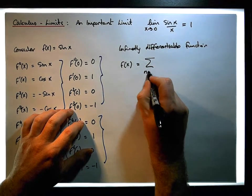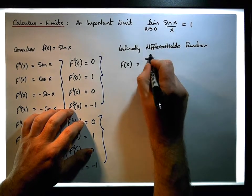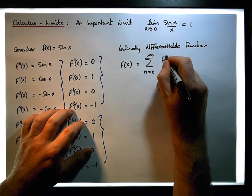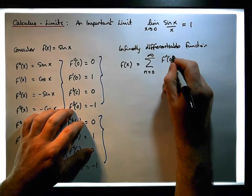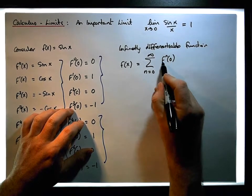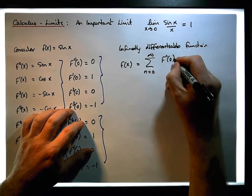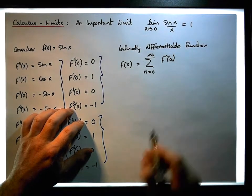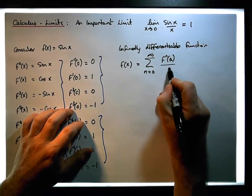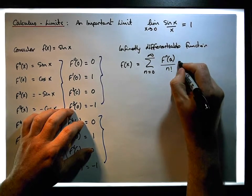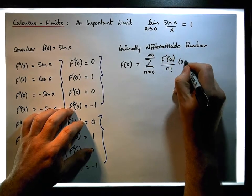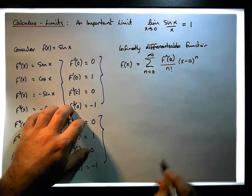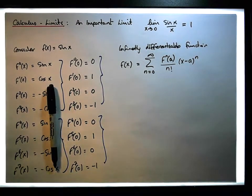The sum from n equals 0 to infinity of the n-th derivative estimated at a, all over n factorial times x minus a raised to the power of n — this is what's known as the Taylor series.